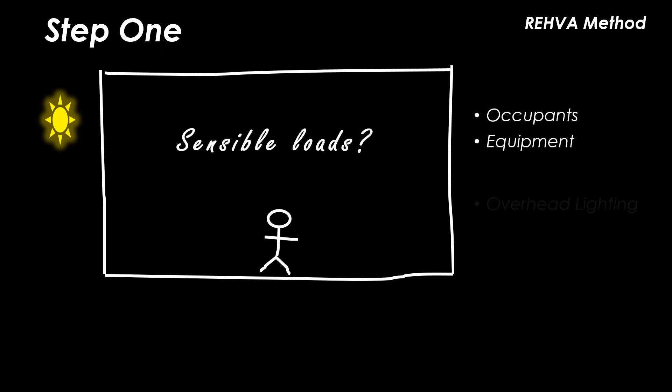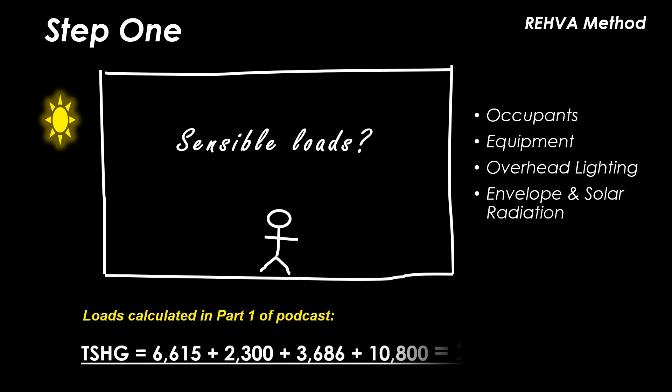The first step is to calculate the total space sensible heat load which will generally consist of occupants, equipment, lighting and envelope loads. To demonstrate the REHVA calculation method I will be using the same 900 square foot classroom used in part one of which the total sensible heat gains are 23,401 BTUs per hour.